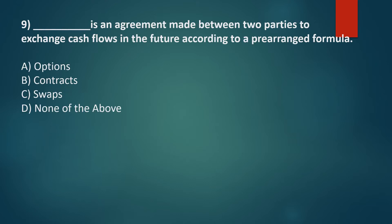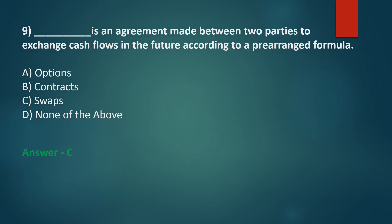What is an agreement made between two parties to exchange cash flows in the future according to a pre-arranged formula? Option A: Options, Option B: Contracts, Option C: Swaps, Option D: None of the above. The correct answer is Option C: Swaps.